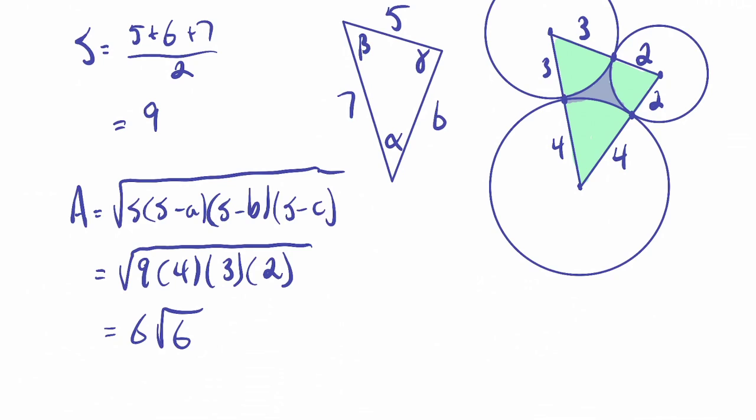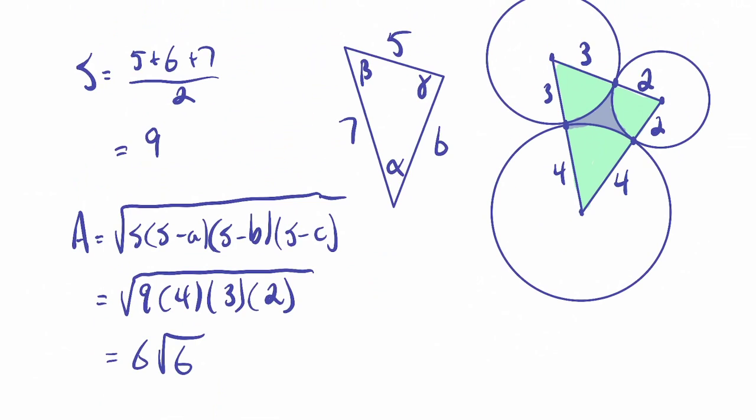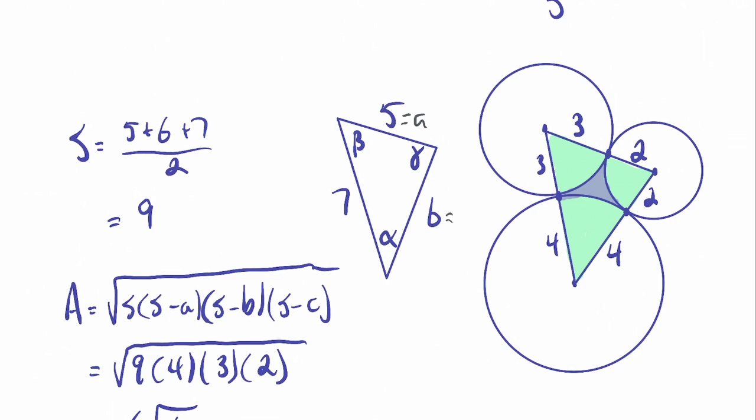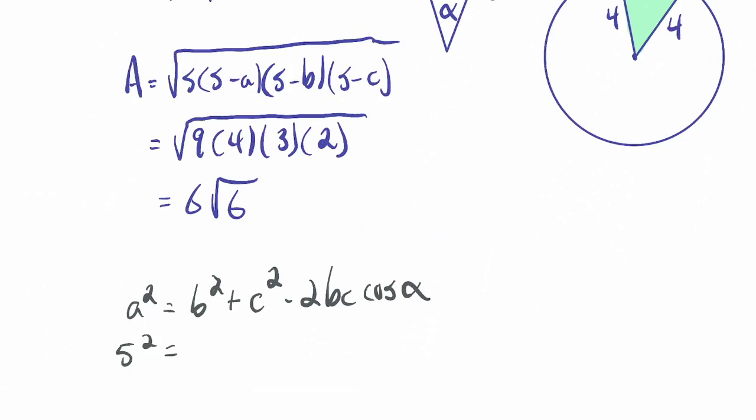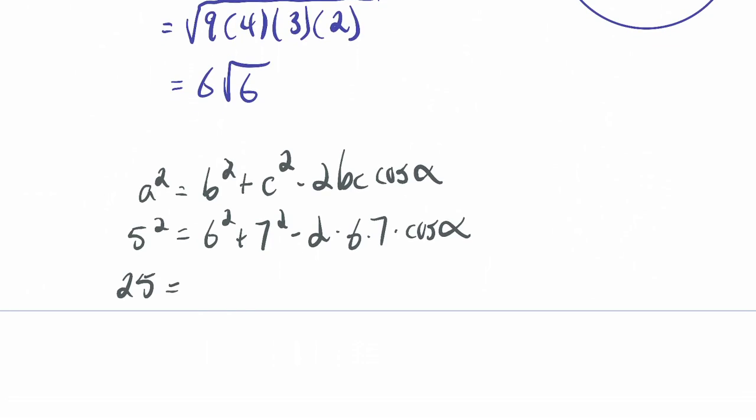So let's start by finding angle alpha. I'm going to start by saying a squared equals b squared plus c squared minus 2bc cosine alpha. So we're using law of cosines. And I know all the side lengths. A is 5, b is 6, and c is 7. So 5 squared equals 6 squared plus 7 squared minus 2 times 6 times 7 times cosine alpha.